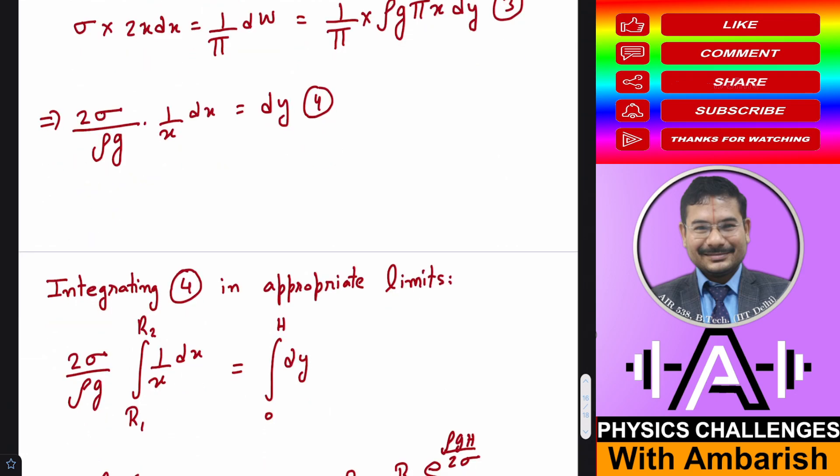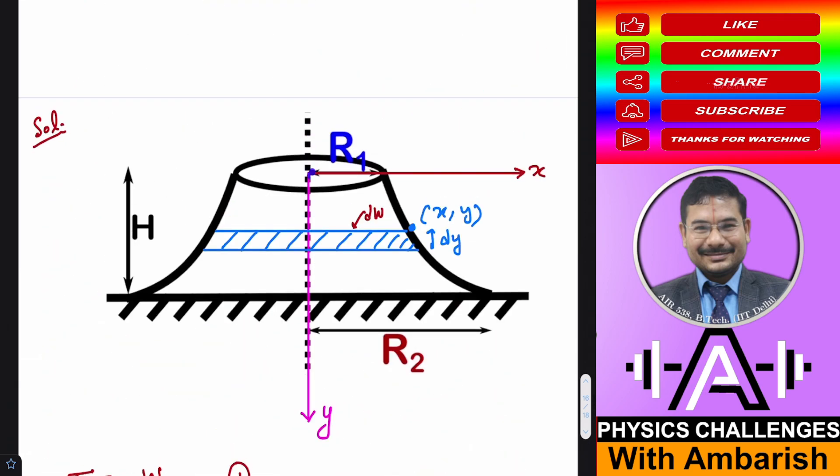So when the radius is R1 your height y is 0, and when the radius is R2 the height is h, let us say. So you see here radius is R1 and y coordinate is 0 because I've taken the origin over here and here the height is h, y coordinate is h, and this is R2.